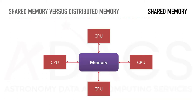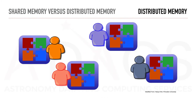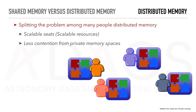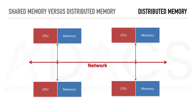In a computer architecture, shared memory can look something like this, where the workers would be the central processing units — the CPUs — and the table would be the memory. In this context, all CPUs share the memory access. In a distributed memory scenario, each member has its own workspace to work on its portion of the puzzle. In this scenario, the number of tables and chairs is scalable. In other words, we have scalable resources, and there is less contention from private memory space.